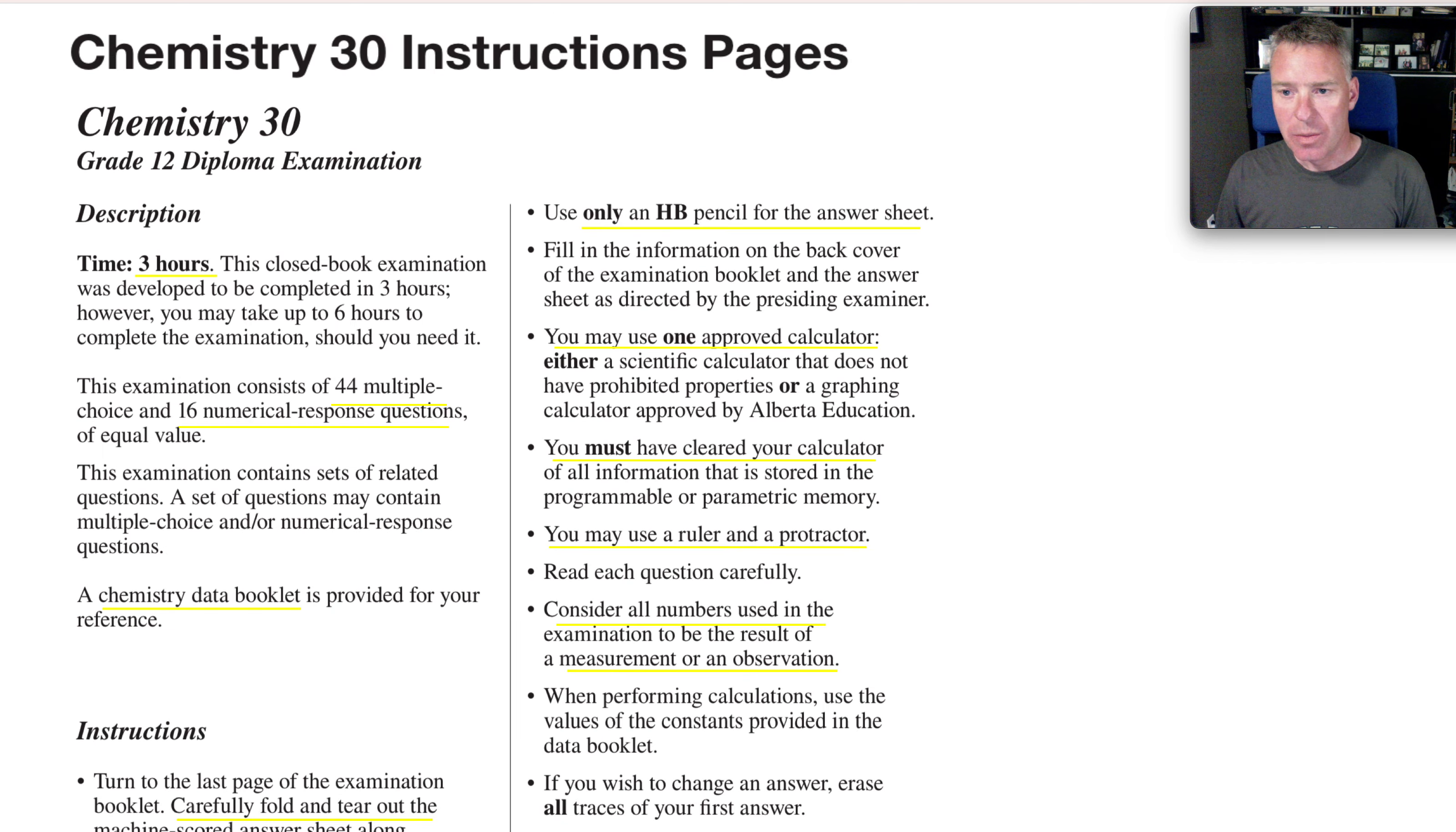Just going through the instruction page on the front of your exam, so you don't have any surprises reading this. The diploma is a three-hour exam. If you think you've got six hours to do it, that is true, but it is not a longer exam with the extra time. It is doable in three hours and quite doable in about three hours and 30 minutes. So that would be my target suggestion for you in writing the exam.